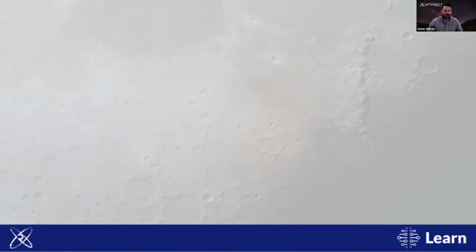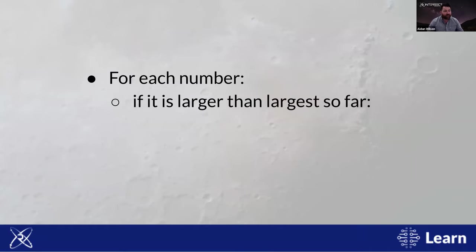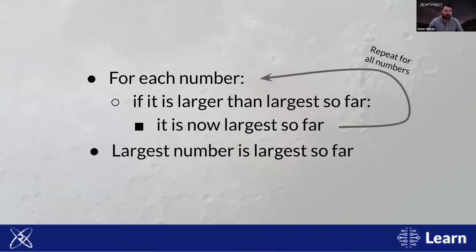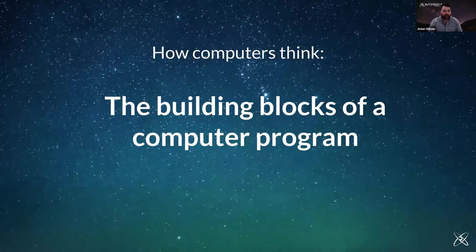Let's reformulate this into something closer to how a computer describes these steps. For each number, we perform a calculation: if it is higher than the number we've seen, we keep it; if not, we move on. We repeat until we have no more numbers. After all numbers are shown, the number we're keeping is the largest. This is called pseudocode — not exactly written in a format a computer can understand, but very close and convertible line-for-line to any real programming language.